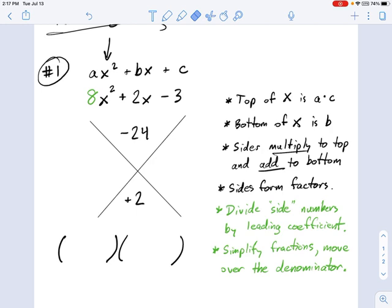So now I have the top and bottom of the big X, and we need to figure out the sides. Well, just like before, you need to figure out factors of negative 24 which add up to positive 2.